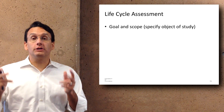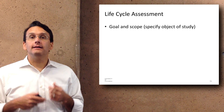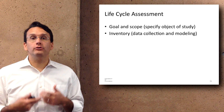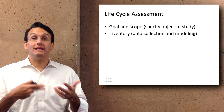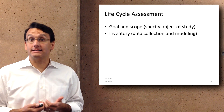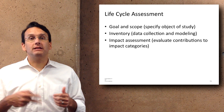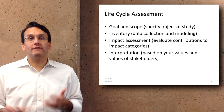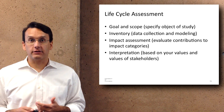The first element is called goal and scope, which involves specifying the object of study — what is it that you're trying to assess? The second is an inventory, a process of data collection and modeling where you do an inventory of the kinds of impacts the object has. The third is called impact assessment, where you evaluate contributions to the various impact categories you defined. The final stage is interpretation — based on your values and the values of stakeholders, how does this impact compare to the impact of other things or what you were expecting?